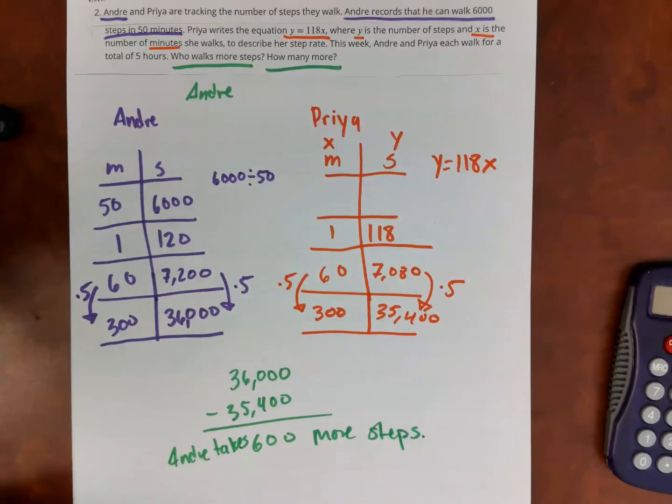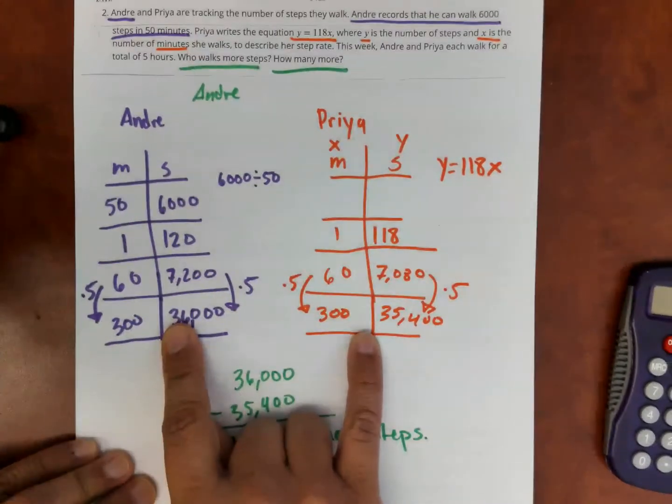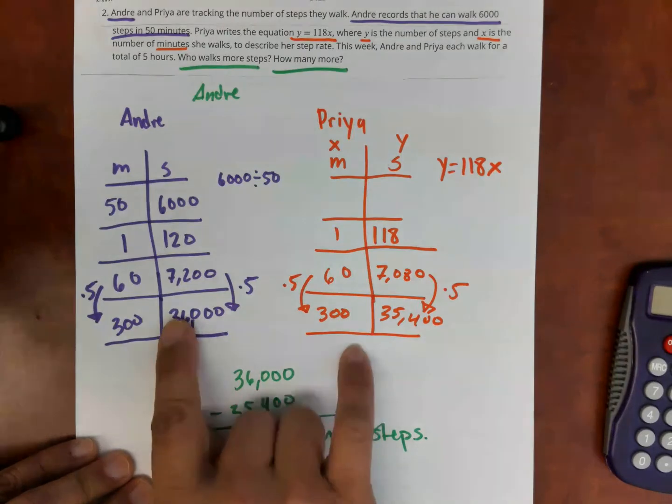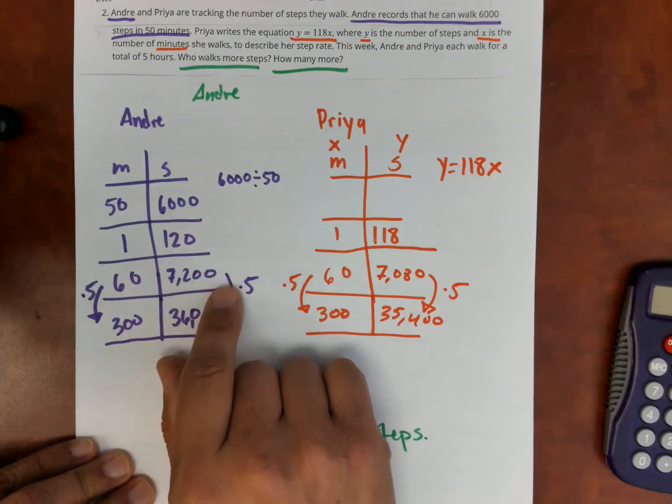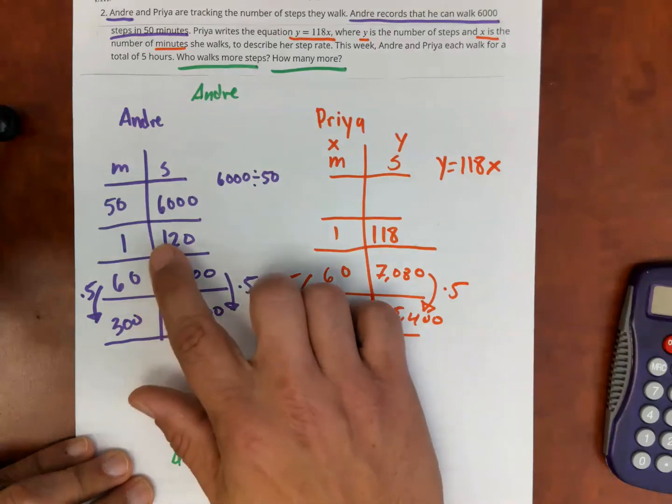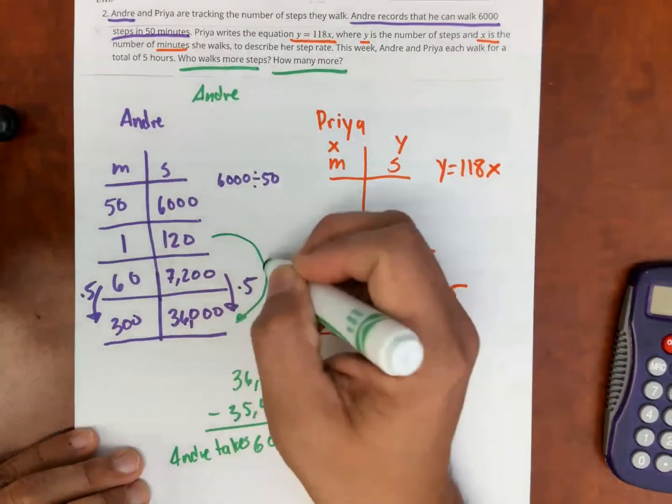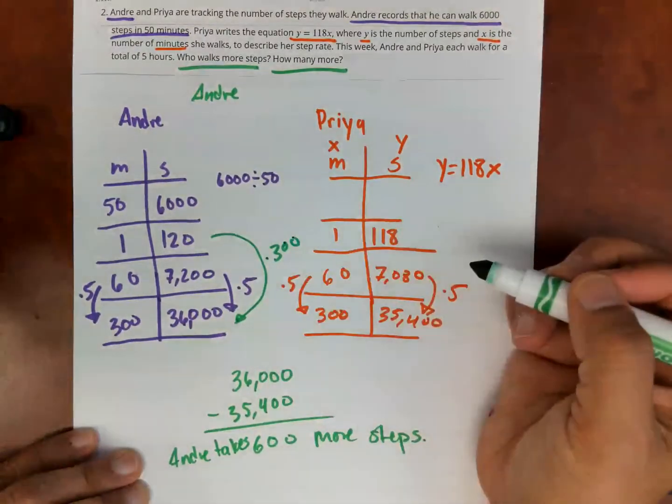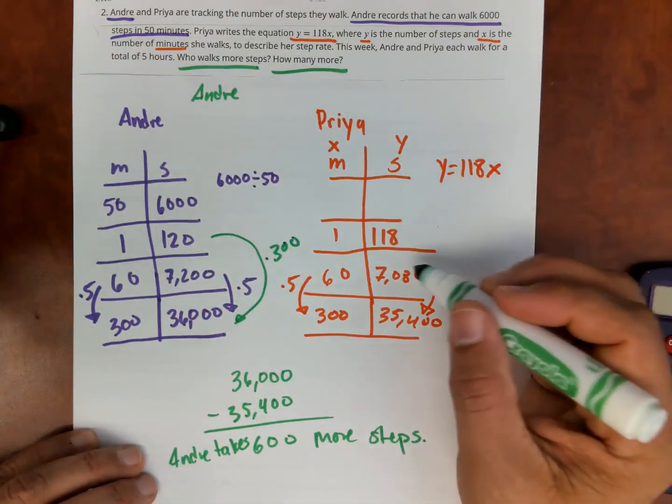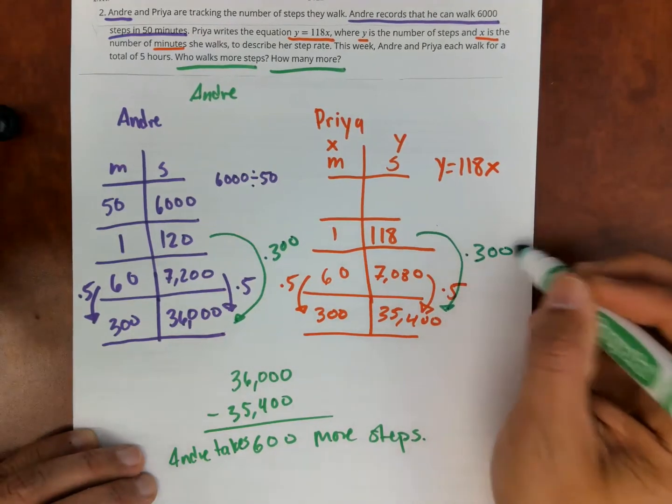And one thing I also want you to notice in doing this problem, we did a table. However, you can also do a graph. I like doing a table because I know that because it's proportional, I can always multiply here. So that five hours is 300 minutes. You can just do this number 120 times 300. Five hours has 300 minutes. You can just do that same thing here. You can do this number here times 300.